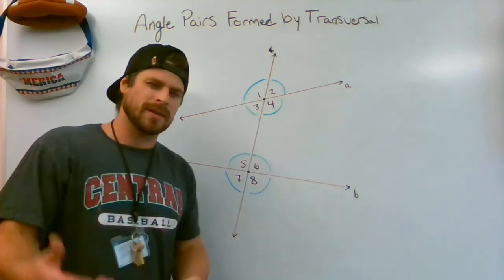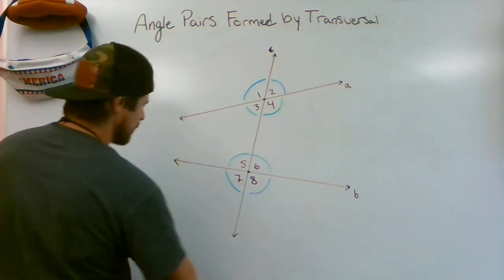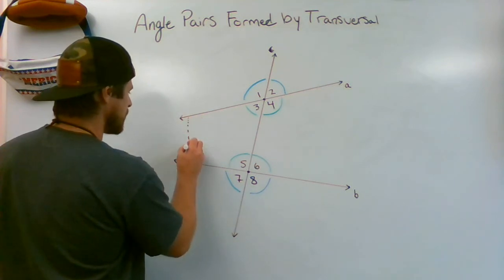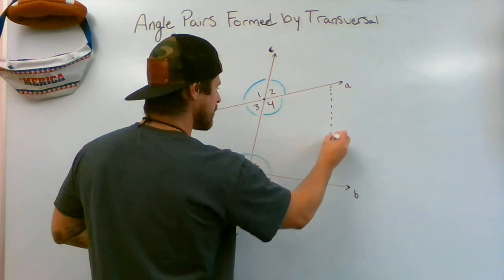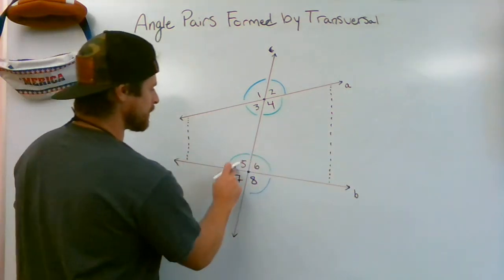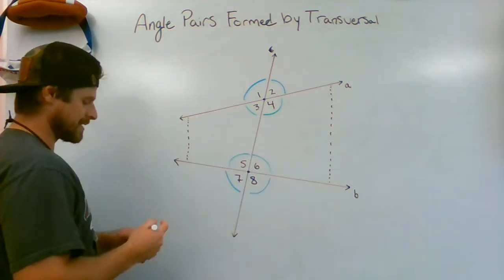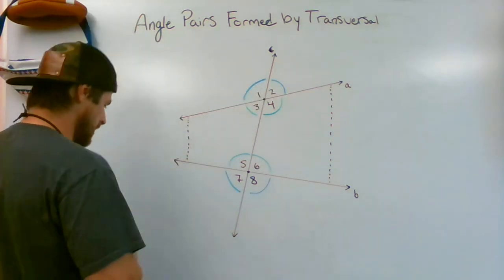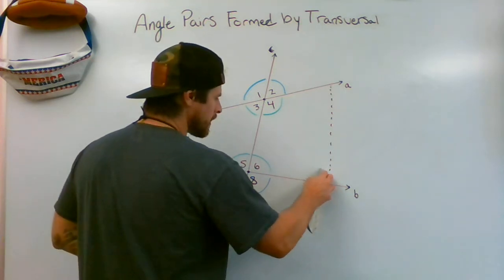One way you can determine this is by drawing — I like to tell my students to draw a dashed line and make a box. Inside the box is five, six, four, and three. Outside the box is seven, eight, one, and two — interior and exterior.